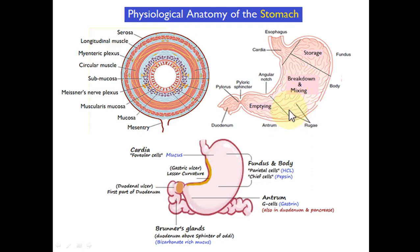The stomach contains many rugae, meaning that when empty it contracts to a smaller size, but when full of food it can expand to a large size. The antrum of the stomach continues into the pyloric sphincter, which allows passage of food into the duodenum, the first part of the gastrointestinal tract.